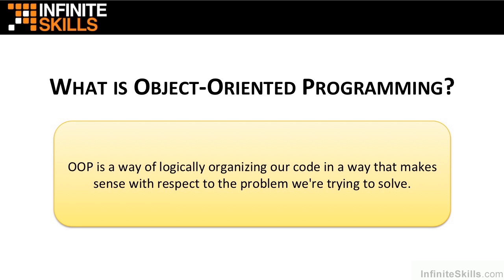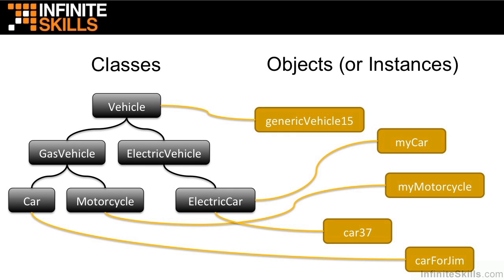Let's take a look at what classes and objects mean. Classes are abstract representations of things — a vehicle, but not a specific vehicle; a car, but not a specific car. You can think of classes as templates. Objects, or object instances, are concrete things: a specific vehicle, such as my car, Jim's car, or car 37.